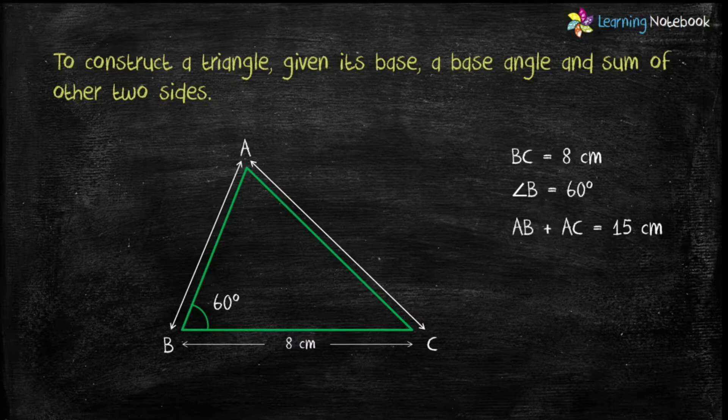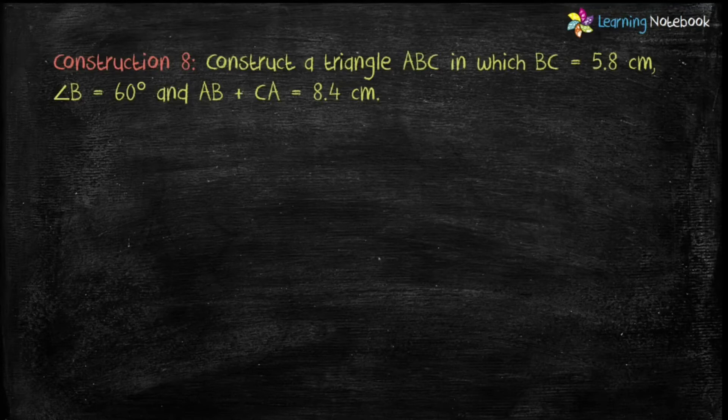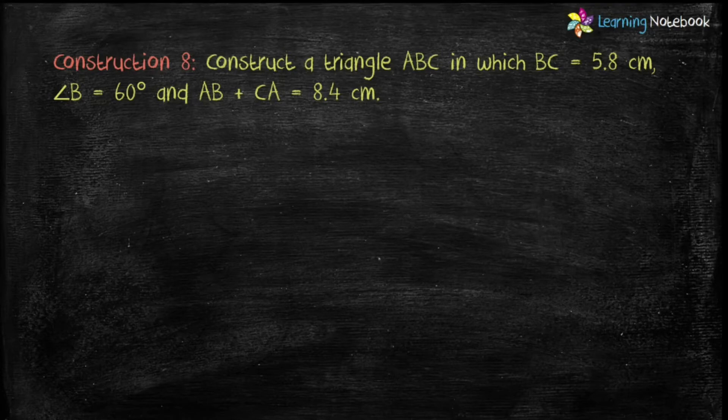Construction: Construct a triangle ABC in which BC equals 5.8 centimeters, angle B equals 60 degrees, and AB plus CA equals 8.4 centimeters.